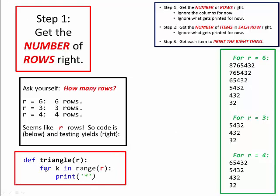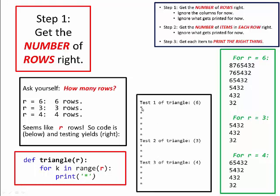Our code has a loop that goes r times. Right now we'll just print an asterisk, and when we test we see the right number of rows for each case — 6 asterisks for r=6, 3 for r=3, 4 for r=4. We keep doing this test until our code yields the right number of rows, and then and only then do we go on to the next step.